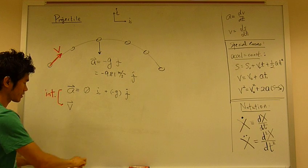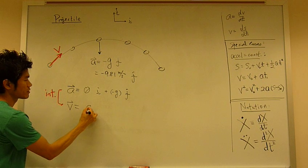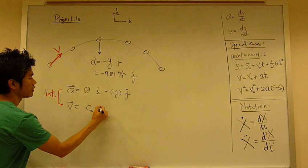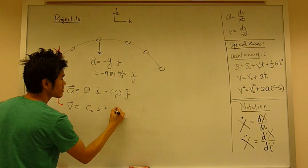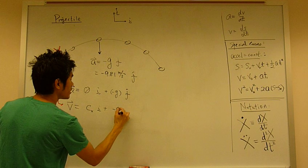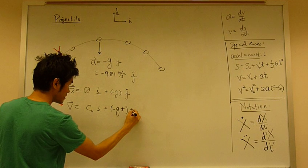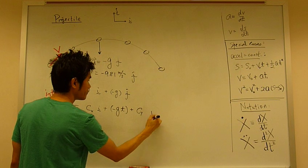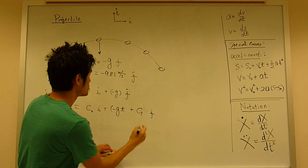Integrating: zero integrated gives some constant - let's call it v_x in the i-direction. This is a constant. Integrate negative g: this becomes negative g times t, plus some constant v_y, in the j-direction.